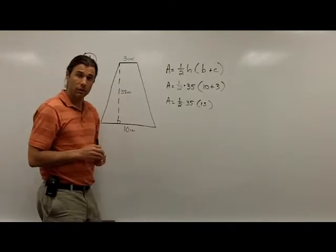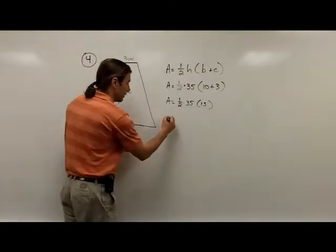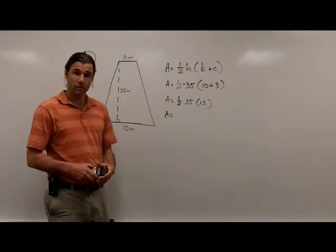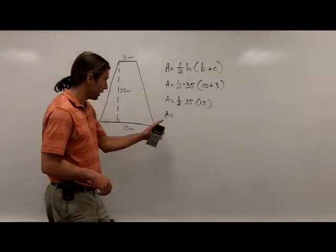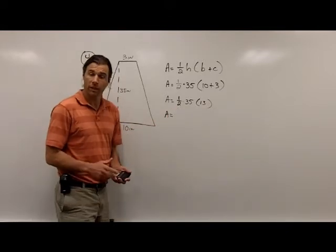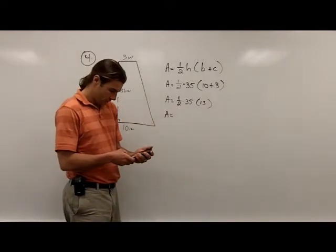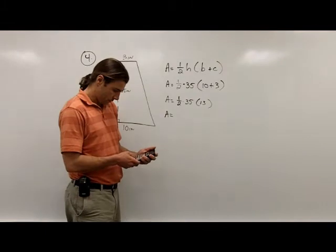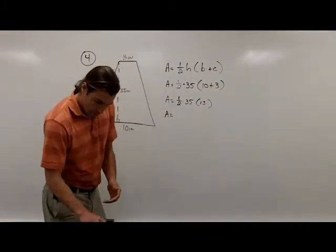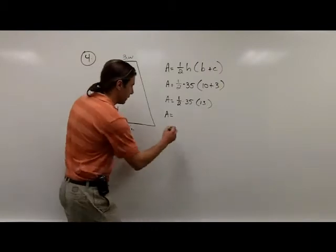Which is going to give me 13. Now I simply just have to go through and multiply the rest of this stuff out. Calculators are allowed on this exam, so I'm just going to punch this in. I have 1/2 times 35 times 13. I want to put 1/2 into my calculator as 0.5, so 0.5 times 35 times 13 is going to give me 227.5.